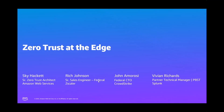We call this Zero Trust at the Edge. All of us — AWS, CrowdStrike, Okta, Splunk, and Zscaler — got together to talk about what we could do in combination as a set of partners, many of whom have best-of-breed capabilities in the Zero Trust space, and what we could do end-to-end for our customers, especially solving some of those hard cases that we hear about.